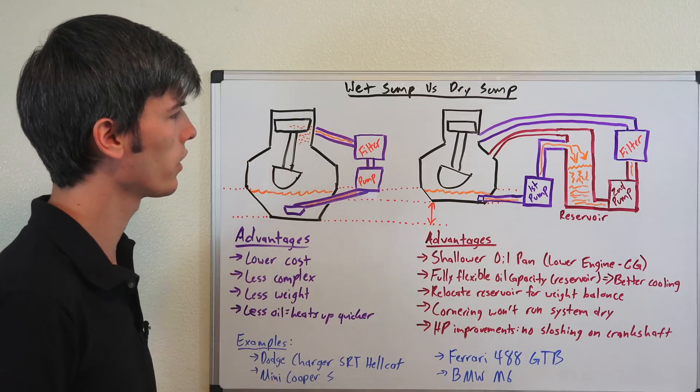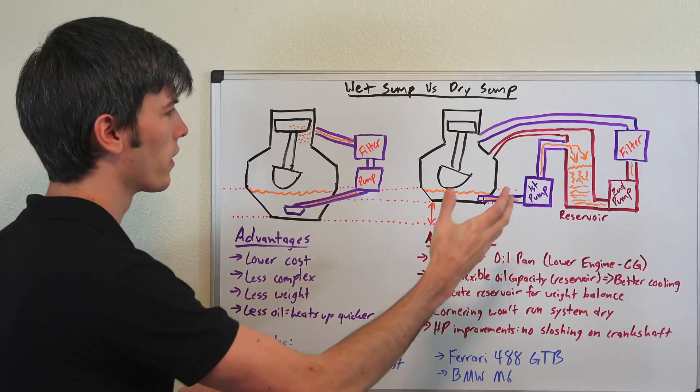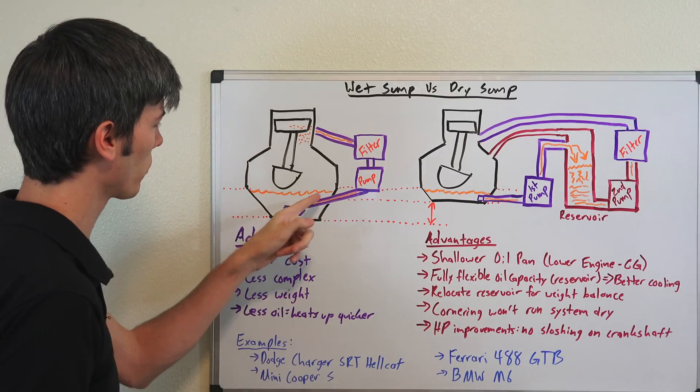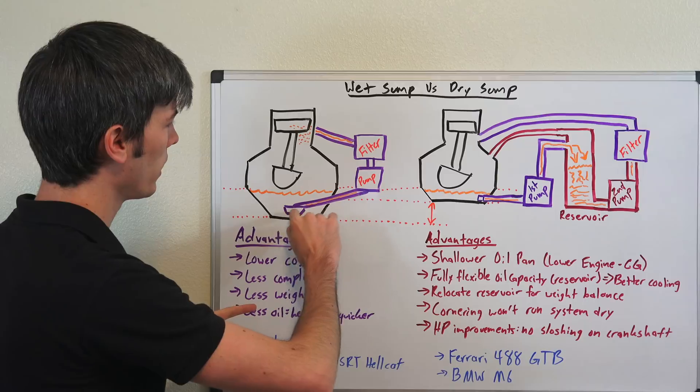That said, let's dive right in. What are the differences between a wet sump, which we have here on the left, versus a dry sump, which we have here on the right? The biggest difference is that the dry sump is going to add a few components. Here on the left you can see the wet sump system - you've got your oil pan right here, you've got your pickup tube right here which is going to be pulling in oil to the pump.